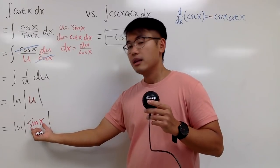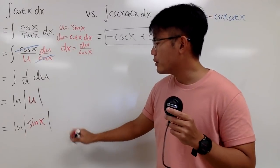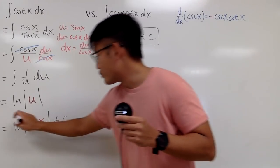And keep in mind, sine x can be negative sometimes, so you do have to maintain the absolute value. But all in all, we are done. So you put a plus c, and that's it right here.